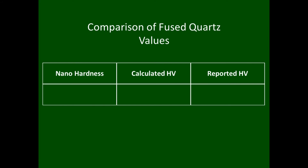Here in our NatLab, we commonly use fused quartz to re-zero our indenter due to its well-established modulus values. Measuring the fused quartz with our system generally yields a nano hardness of approximately 9.0 gigapascal. Plugging that into our equation to convert, we can see it comes to 850.7 kilogram force per millimeter squared. Reported values for the Vickers hardness of fused silica are generally between 850 and 950 kilogram force per millimeter squared, so our calculations yield results fairly consistent with the reported values.